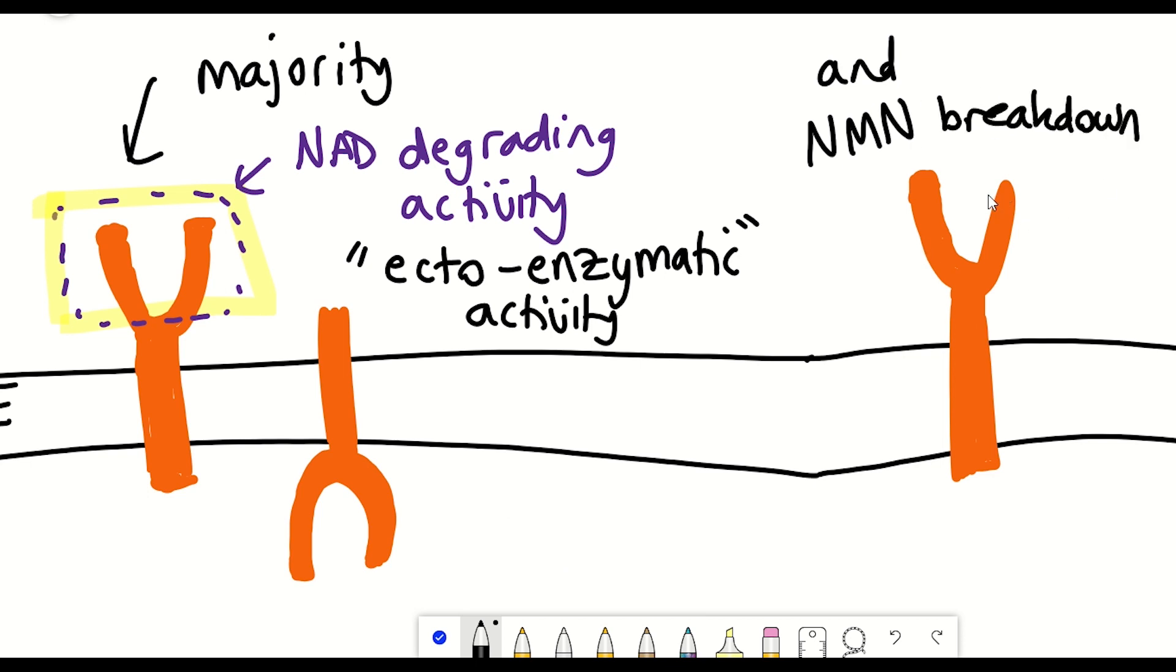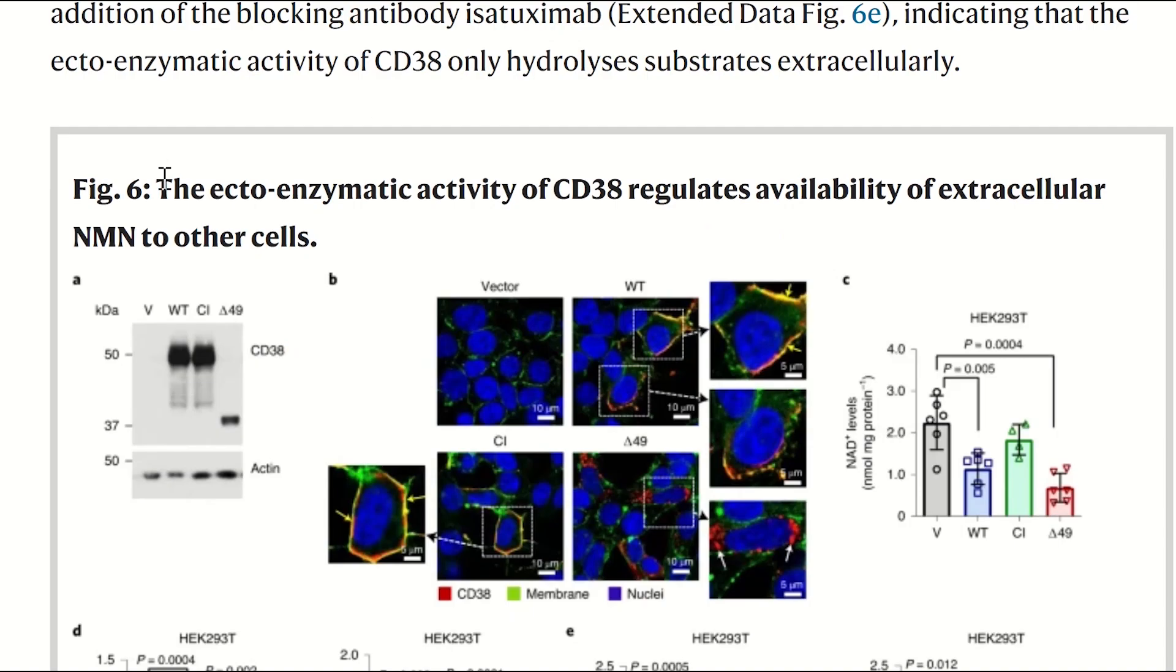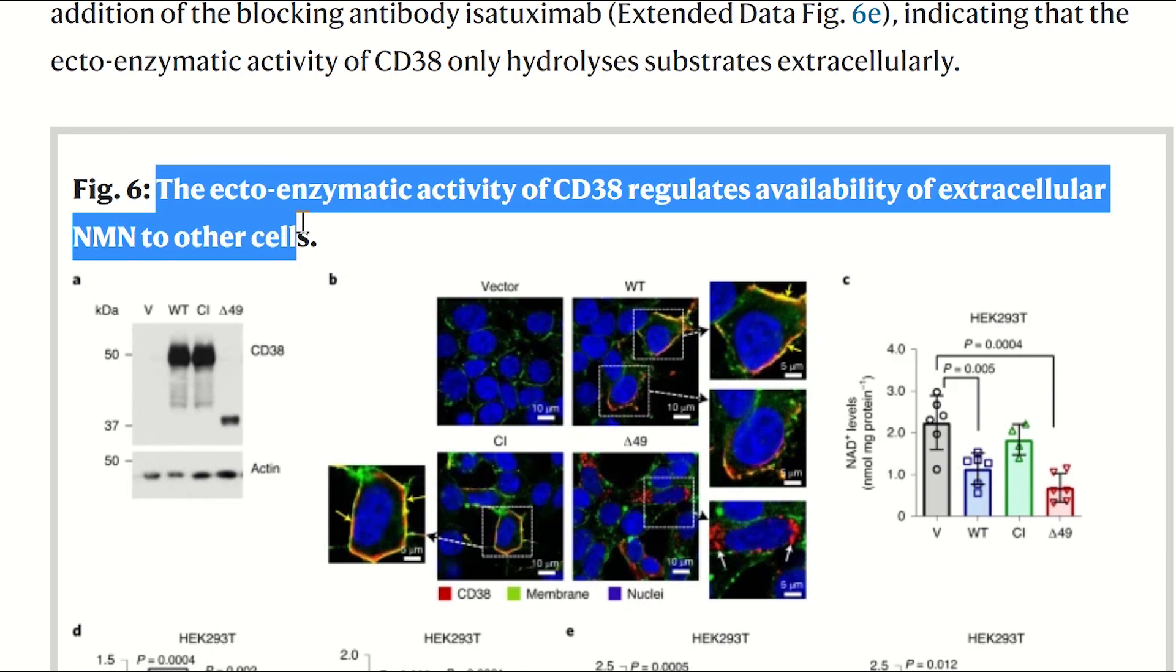As they tease apart in this study by using a variety of different inhibitors of CD38—both different compounds and antibodies that can inhibit the activity of CD38—they show that what seems to be the case is that CD38 is controlling the availability of NMN to other cells.